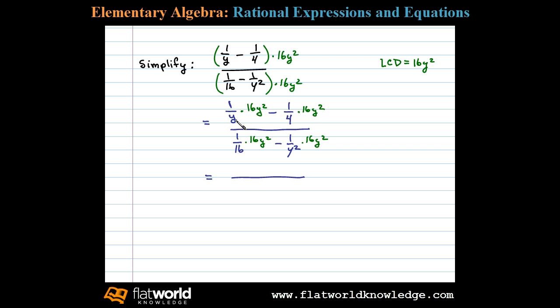In this case in the numerator y cancels and that will leave us with 16 y minus 4 divides into 16 4 times so minus 4 y squared. In the denominator here 16 cancels leaves us with y squared. And then here y squared cancels so we're left with minus 16.